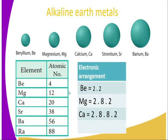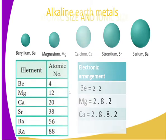The electronic configuration of the first elements which belong to the first 20 elements of the periodic table: beryllium has 2, 2; magnesium has an electronic configuration of 2, 8, 2; calcium has an electronic configuration of 2, 8, 8, 2. All of them have got 2 electrons in the outermost energy level, and hence they belong to group 2.